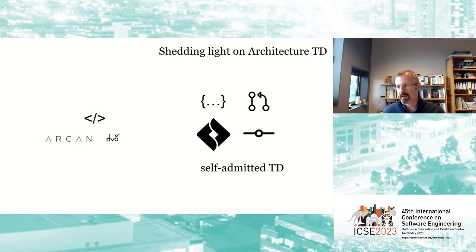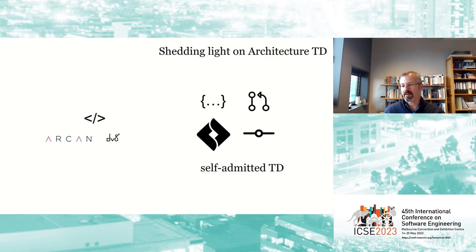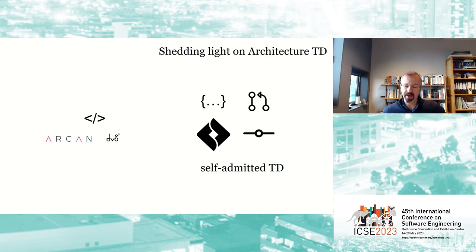There is also the so-called self-admitted technical debt — text that developers write in source code, such as 'TODO' or 'FIXME'. In the past couple of years, researchers have been mining code comments, issue trackers, pull requests, and commit messages to detect self-admitted technical debt at the architectural level — and this is becoming more and more successful.